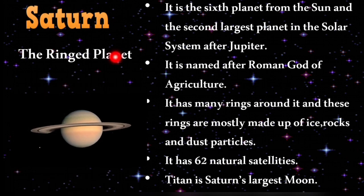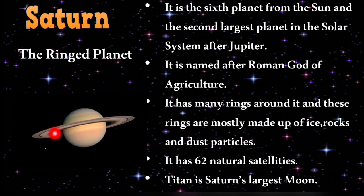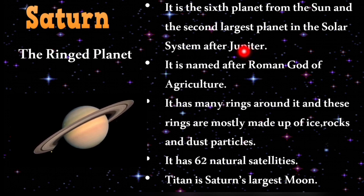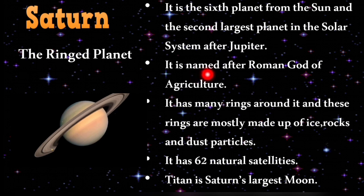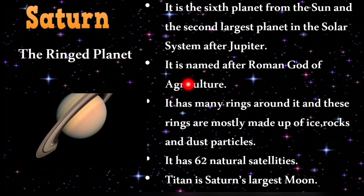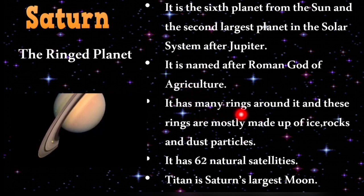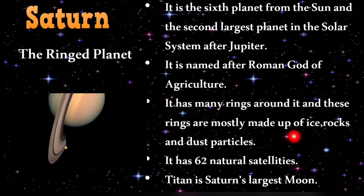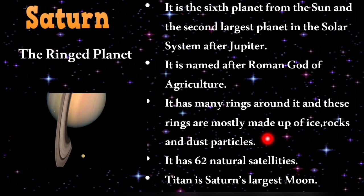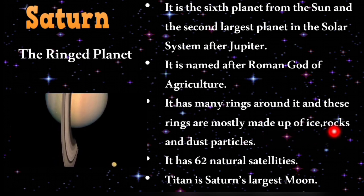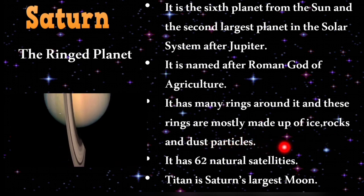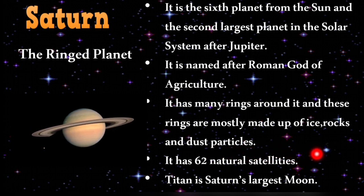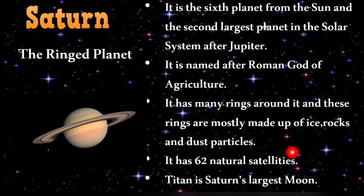Saturn is called the ringed planet. It is the sixth planet from the sun and the second largest planet after Jupiter. Named after the Roman god of agriculture, it has many rings made up mostly of ice, rocks and dust particles. Saturn has 62 natural satellites, of which Titan is the largest moon.